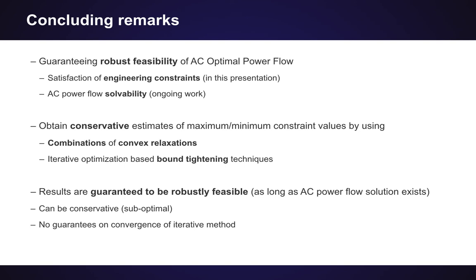We use a non-standard objective function and combinations of convex relaxations to get reasonable relaxations — otherwise a single relaxation type might produce very non-tight solutions. The results guarantee robust feasibility as long as the AC power flow solution exists, but they can be conservative and suboptimal. There are no convergence guarantees for the iterative method, but we observe it works very well in practice. Hopefully this was useful!